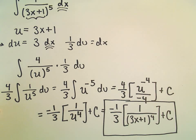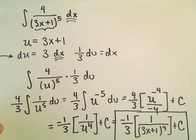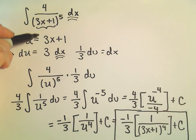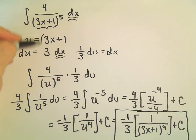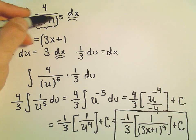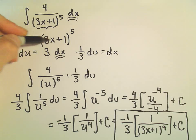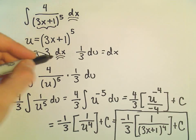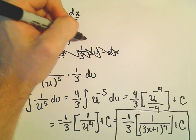So u substitutions, super, super, super common. It's easy to pick a u that's kind of too big. Notice, maybe you try to pick it to be everything, you know, (3x+1) to the 5th. But kind of the issue is, if you do something like this, when you do the du, you'd have to use the chain rule.